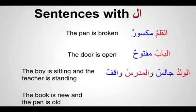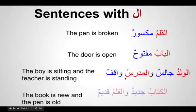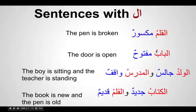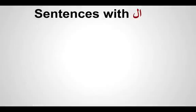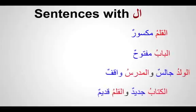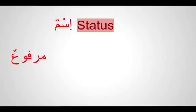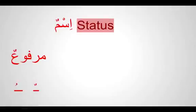Al-baabu maftoohun, al-waladu jaalisun, wal-mudarrisu waaqifun — the door is open, the boy is sitting, and the teacher is standing. Al-kitaabu jadeedun, wal-qalamu qadeemun — the book is new and the pen is old. In all these sentences the muptada begins with al-, and what you notice is a sign of damma — not fatha or kasra, but damma. This tells us that the muptada is marfu. Marfu means it carries a single damma or double damma.